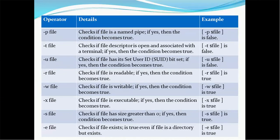Hyphen s file checks if the file size is greater than zero. If yes, the condition becomes true, making it useful for checking if a file is empty. Hyphen e file checks if the file actually exists. This allows you to proactively validate whether a file exists before performing operations, instead of getting unexpected errors.